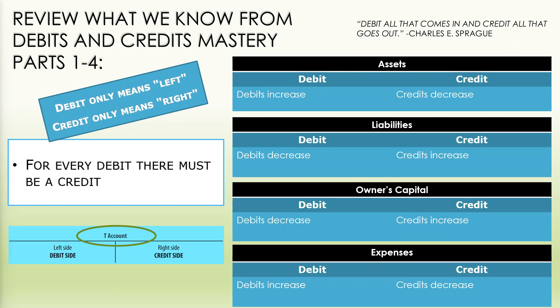Let's briefly review how debits and credits will impact certain accounts. For assets, debits will increase while credits will decrease. For liabilities, debits will decrease while credits increase. For owner's capital, debits decrease while credits increase. And for expenses, debits will actually increase while credits will decrease those accounts.